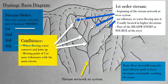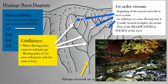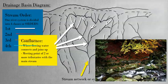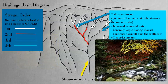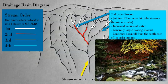This joining is called a confluence. After the confluence of first order streams, you get the creation of a larger stream with more water flowing through the channel, which is called the second order stream.